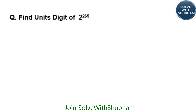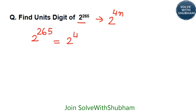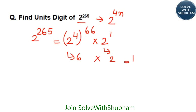Find out the unit digit of 2 to the power 265. As we know, cyclicity of 2 is 4. We will try representing this number in terms of 2 to the power 4n. So we divide 265 by 4, giving 4 × 66 remainder 1, which is 2 to the power (4×66) into 2 to the power 1. The first part ends with 6, and 2 to the power 1 ends with 2. So the unit digit is 2.